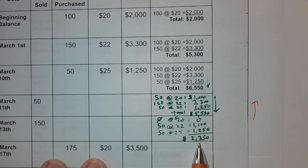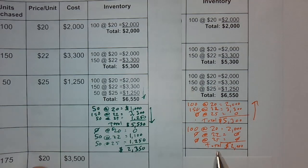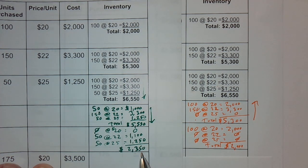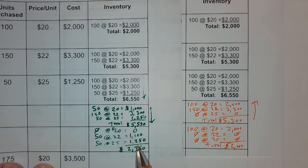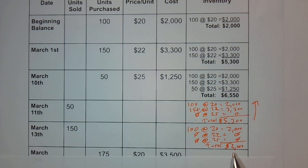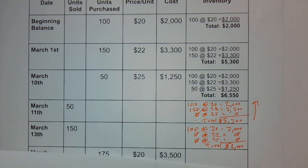Notice the difference: under FIFO we had $2,350 remaining in inventory, versus $2,000 under LIFO. Since inventory is an asset, our assets are higher under FIFO in this case. This difference occurs because prices were rising; if prices were falling, the impact could be reversed.